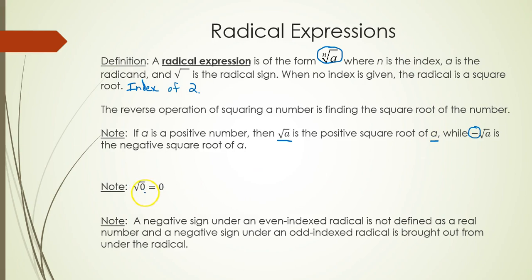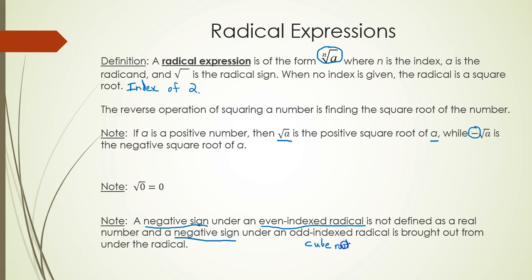Your calculator will verify that the square root of 0 is equal to 0. Another important thing is that if you ever have a negative sign under an even index radical, such as a square root, the answer is not defined as a real number — it's not real. But if you have a negative sign underneath an odd index radical, such as a cube root with index 3, you're allowed to bring that negative sign out front of the radical.